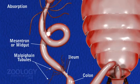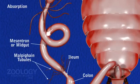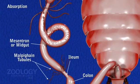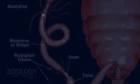Absorption. Epithelial cells of the enteric caeca and midgut are also absorptive. They absorb digested food which is stored in the diffused fat bodies. Generally, large quantities of fat are absorbed by the epithelial cells of the crop.